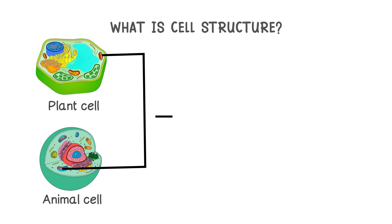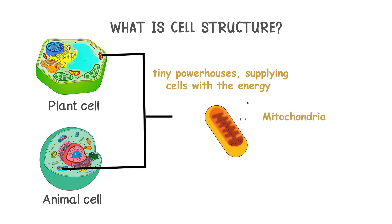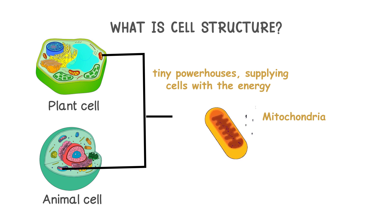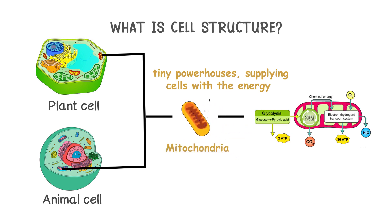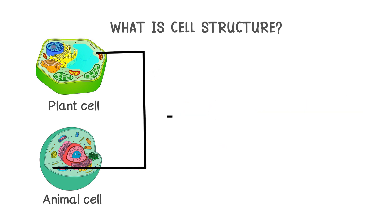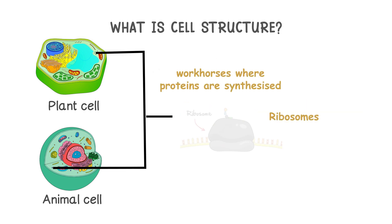Both cell types also share mitochondria, which are like tiny powerhouses supplying the cells with the energy they need. These mitochondria break down glucose through aerobic respiration, releasing energy for the cell's activities. And let's not forget about ribosomes — they're the workhorses where proteins are synthesised.